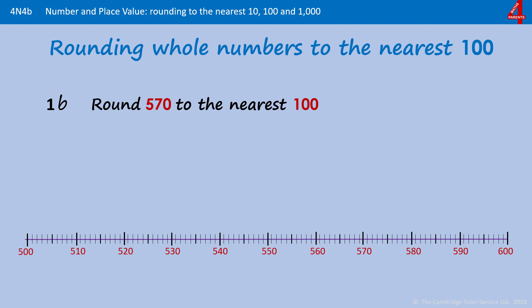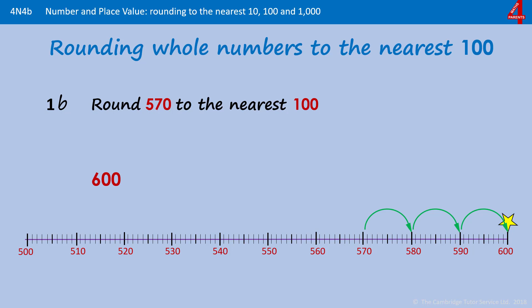Round 570 to the nearest 100. Pause the video and have a go. There's 570 and you can see it's nearer to 600 than it is to 500. 570 rounded to the nearest 100 is 600.